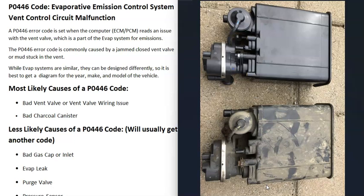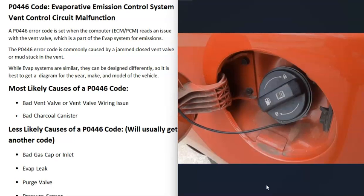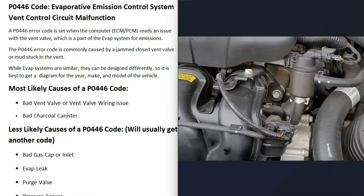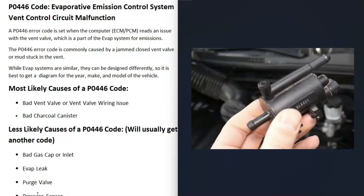Other things that can cause this code include a bad gas cap or a bad filler inlet on vehicles without a gas cap. If the gas cap isn't sealing correctly, it can cause an EVAP leak — though usually a bad gas cap gives you a different code like P0455, evaporative emission system leak detected. There's also the purge valve up near the engine, another solenoid that's part of the EVAP system. If it has an issue it can cause problems, but a bad purge valve usually generates its own separate code.